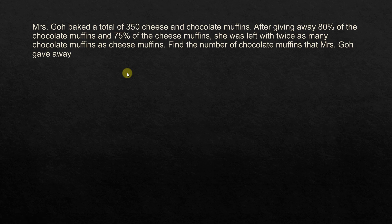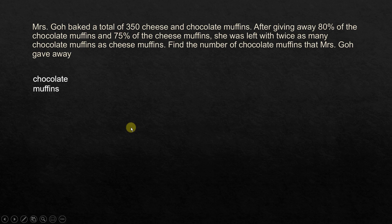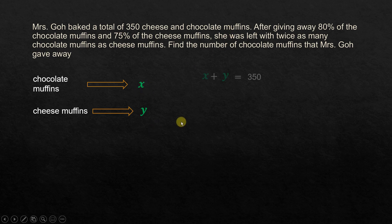For the benefit of those who missed or skipped the previous section, I will read the question once again. Mrs. Goh baked a total of 350 cheese and chocolate muffins. After giving away 80% of the chocolate muffins and 75% of the cheese muffins, she was left with twice as many chocolate muffins as cheese muffins. Find the number of chocolate muffins that Mrs. Goh gave away. We have two quantities — cheese muffins and chocolate muffins — so let's represent them as X (chocolate) and Y (cheese). X plus Y equals 350, and that is our first equation.